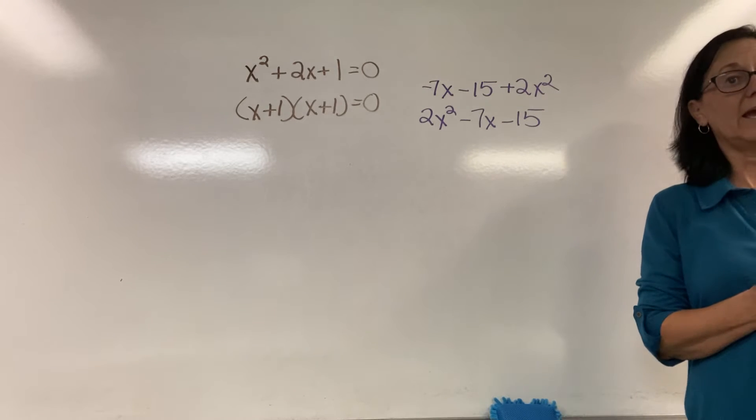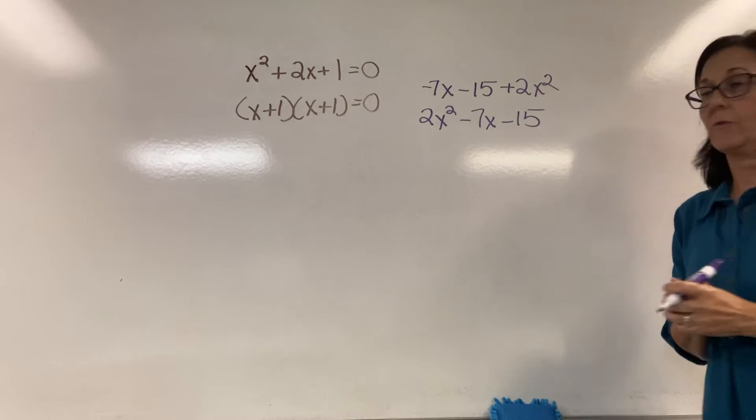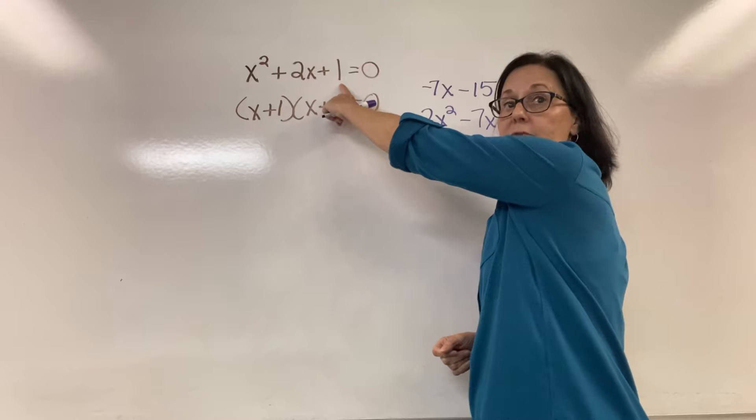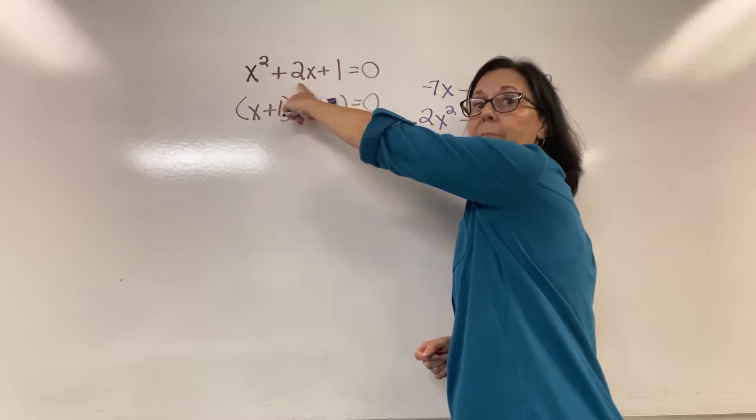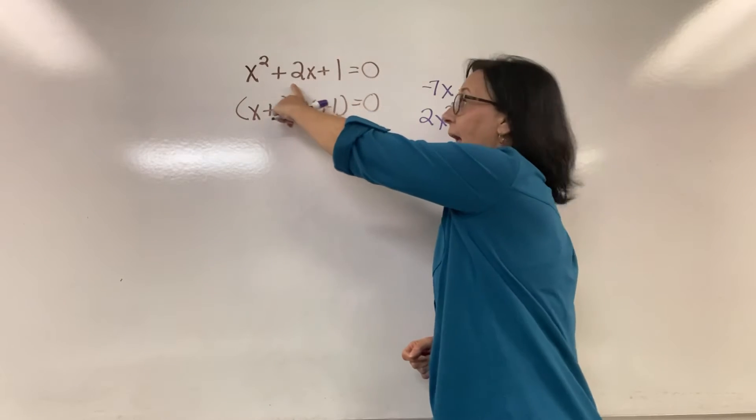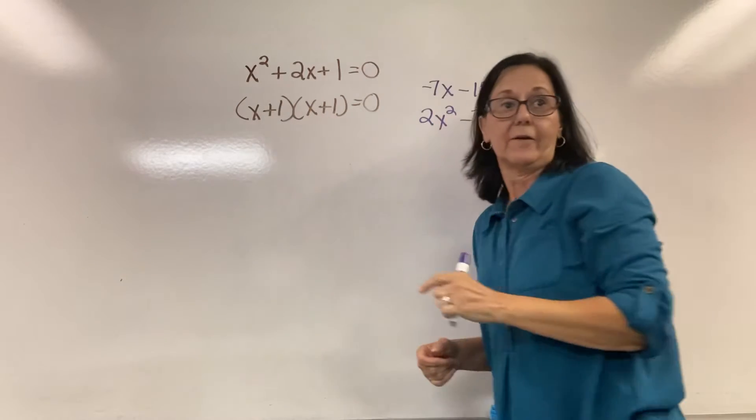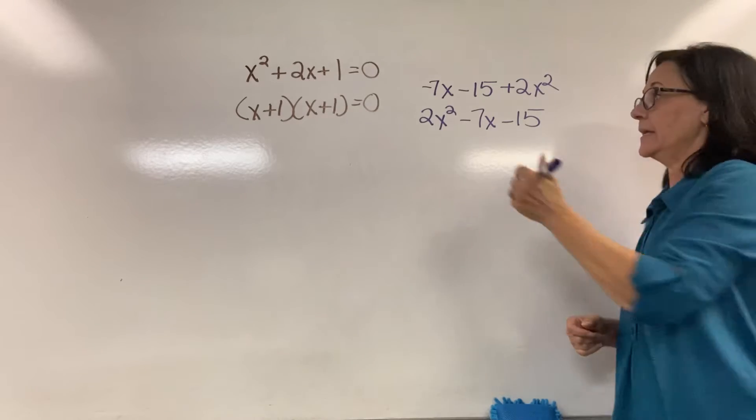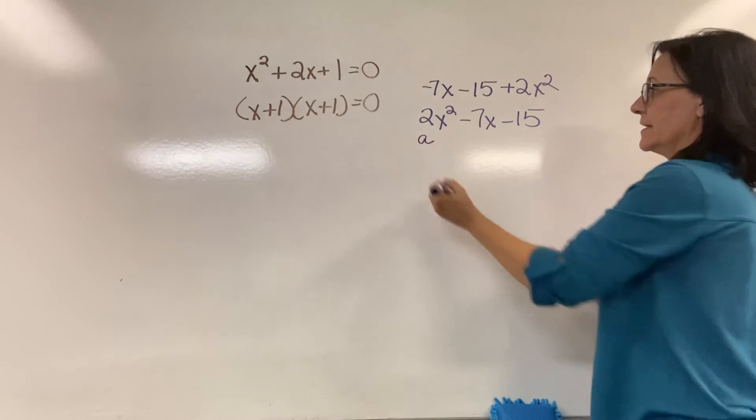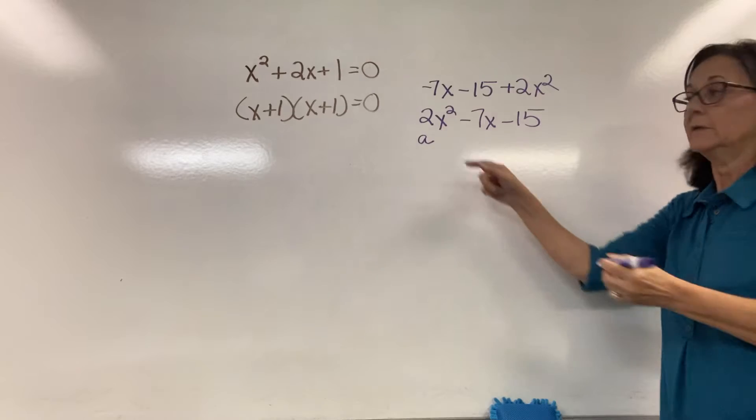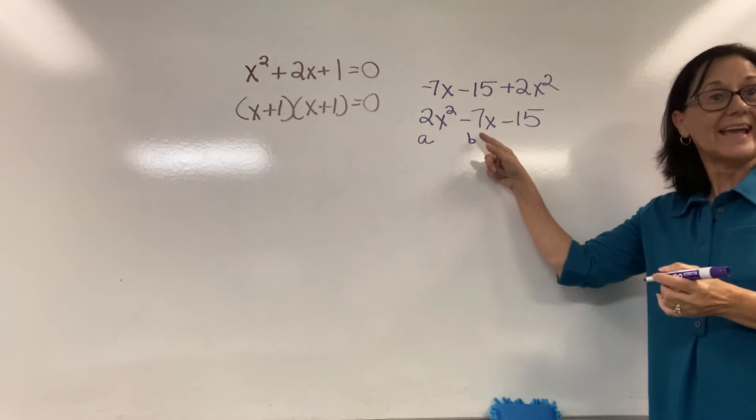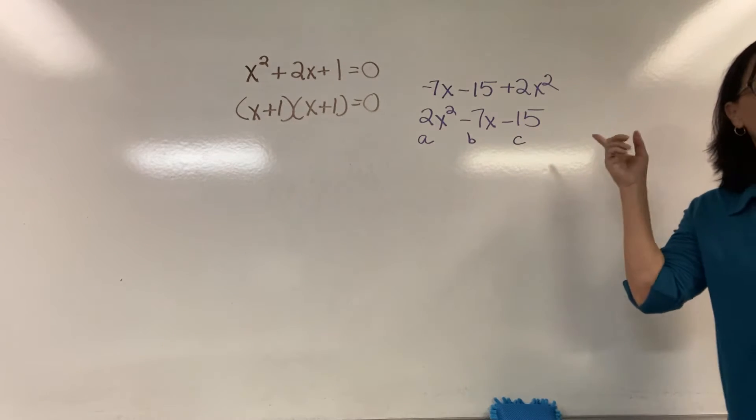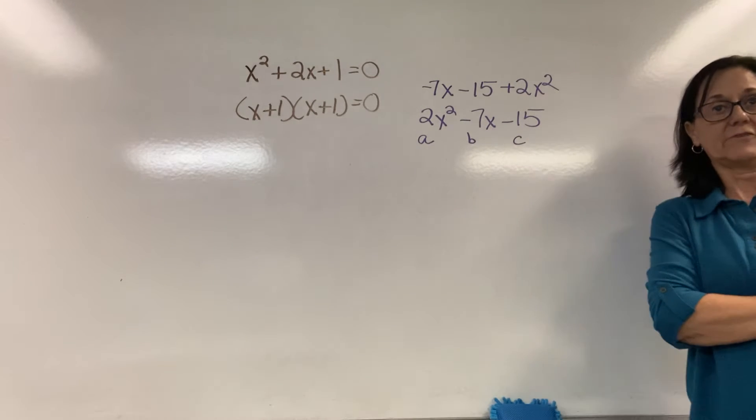Now we're going to talk about what our a, b, and c values are. Remember we said multiply equals the c value, but added equal the b value. So a always went with x squared. The value of a is 2. The value of b is negative 7. The value of c is negative 15.